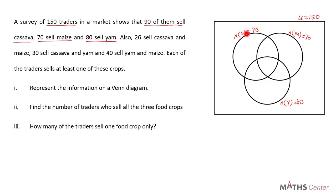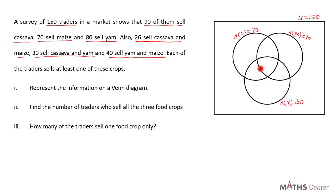I'll use C for cassava, M for maize, and Y for yam. The question tells us that 26 sell cassava and maize, 30 sell cassava and yam, and 40 sell yam and maize. We don't know the number of people who sell all three crops, so let's call that x. With x as the three-set intersection, we can find the number who sell cassava and maize only, cassava and yam only, and maize and yam only.